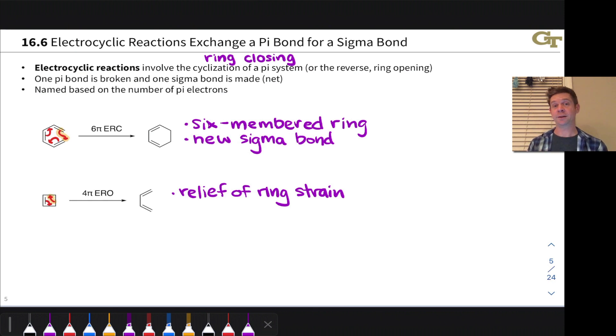One last thing to consider here is stereochemistry. Electrocyclic reactions can form stereocenters, both tetrahedral stereocenters, when we're closing a ring and creating that new sigma bond, and trigonal stereocenters with EZ configurations, for example, when we open a ring. So we'll talk a little bit more about how to predict the stereochemistry of electrocyclic reactions in the near future.